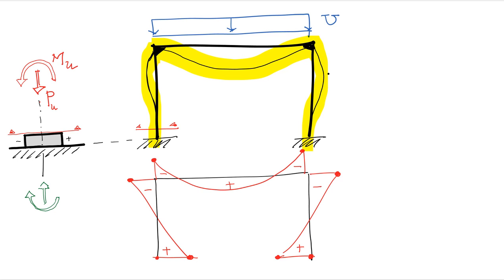This is the moment diagram here shown in red and at a critical section shown here as a red section, I'm showing the applied moment and axial loads. Now we want to design this column to be able to resist these forces.